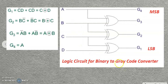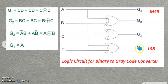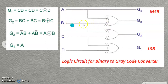Now all output equations are simplified. All outputs except G4 use XOR gates, so we need three XOR gates. G1 = C XOR D: one wire from C, one from D, merged into an XOR gate with output G1. G2 = B XOR C: wires from B and C into an XOR gate giving G2. G3 = A XOR B: wires from A and B into an XOR gate giving G3. G4 = A: a straight wire from A.